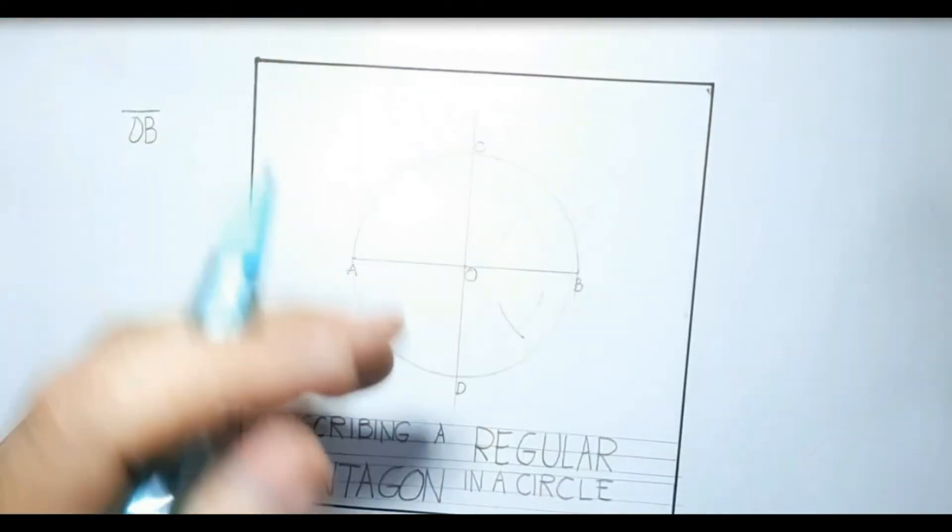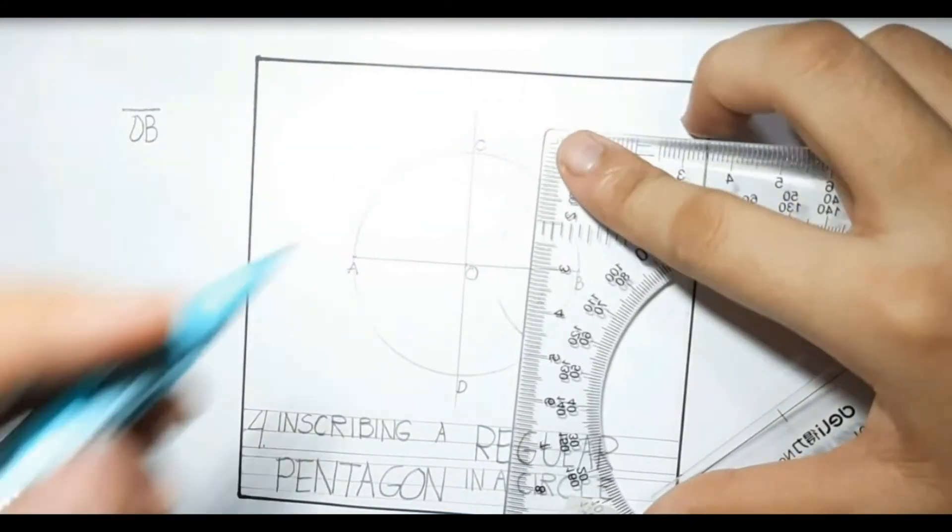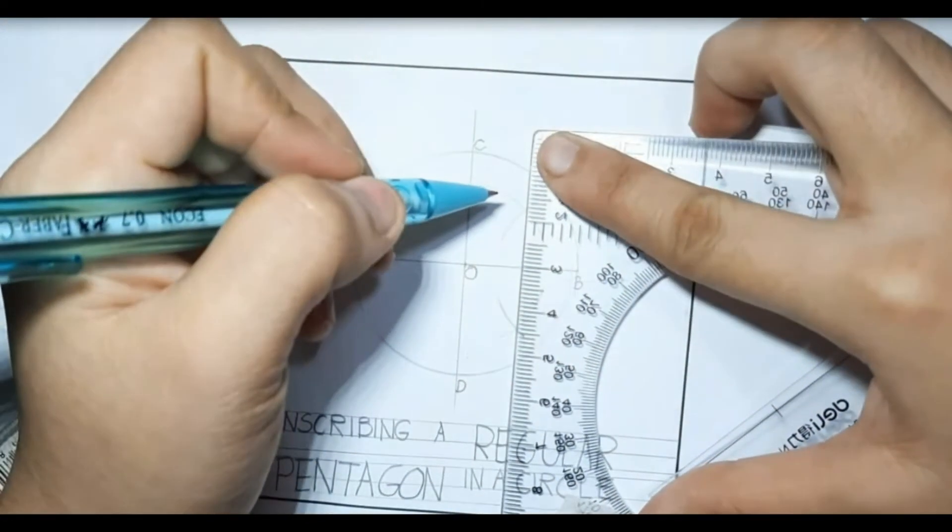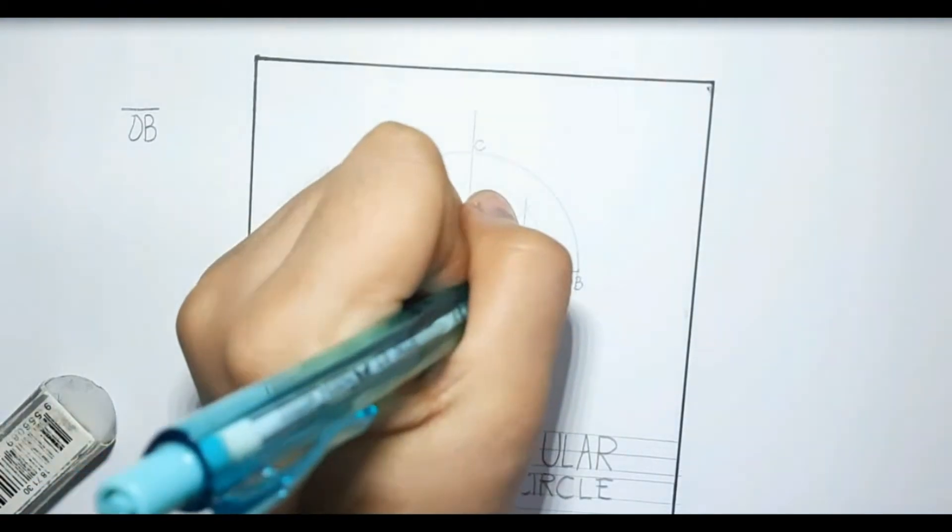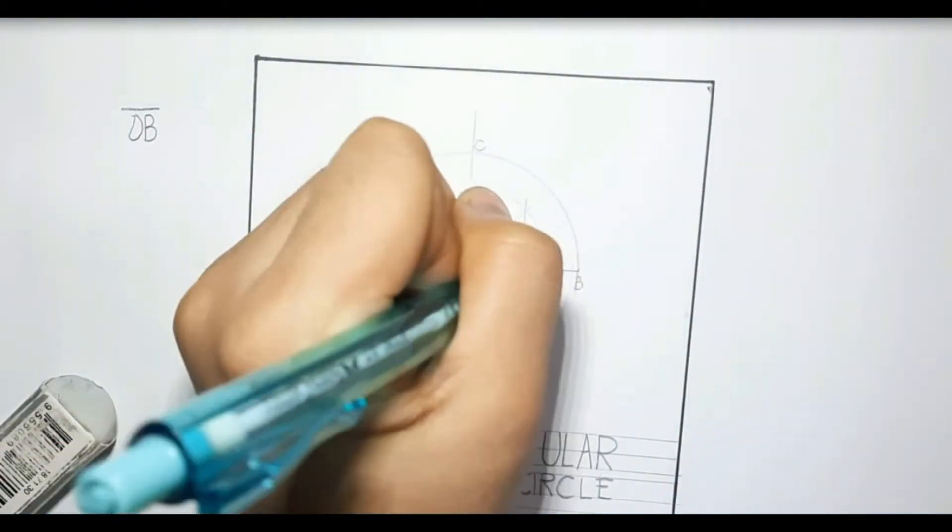The intercepted arcs draw a line passing through line OB. At the center of line OB, we'll name it point E.